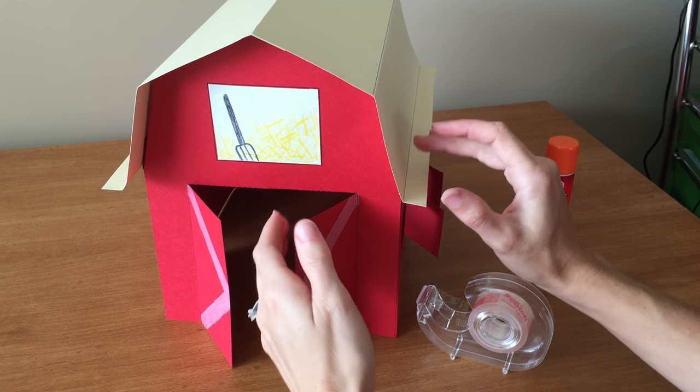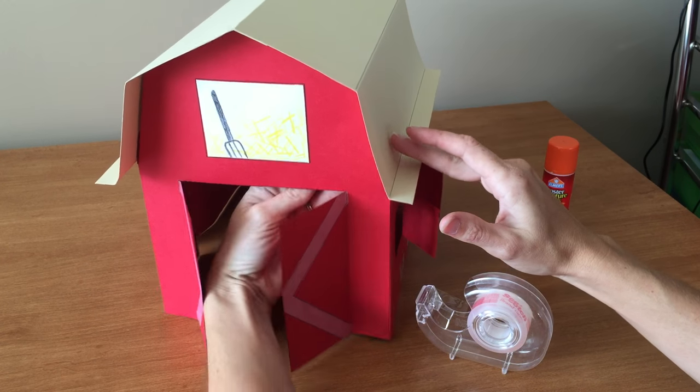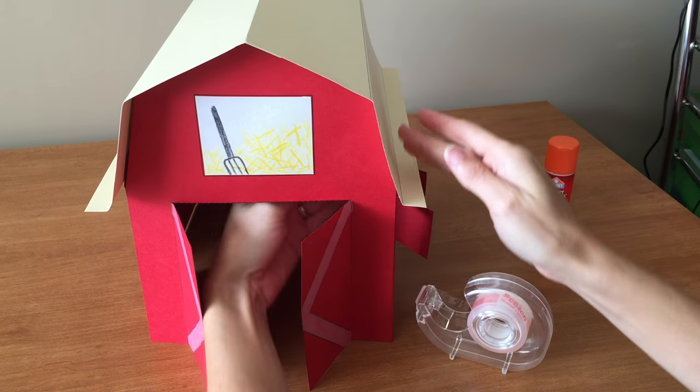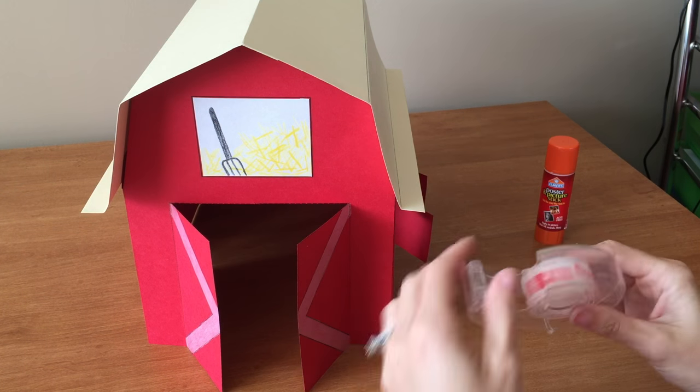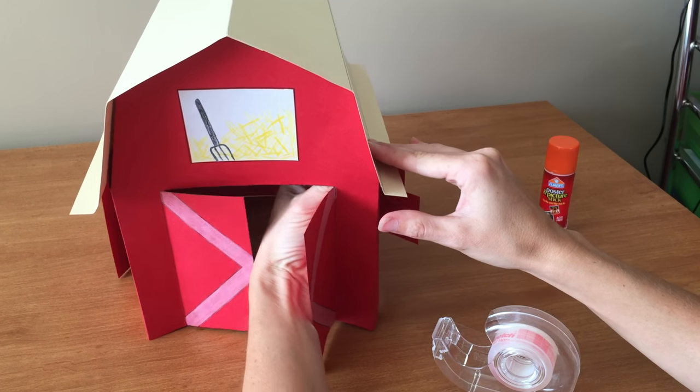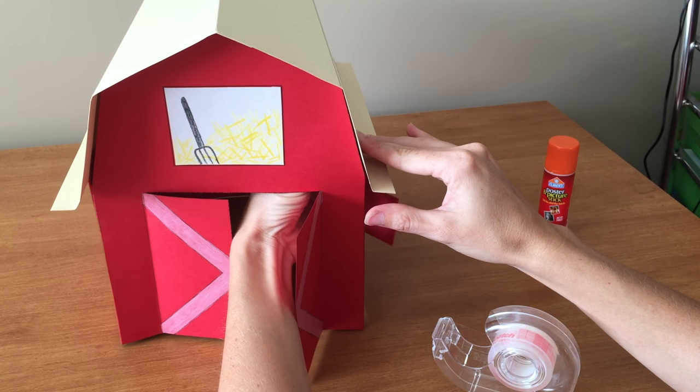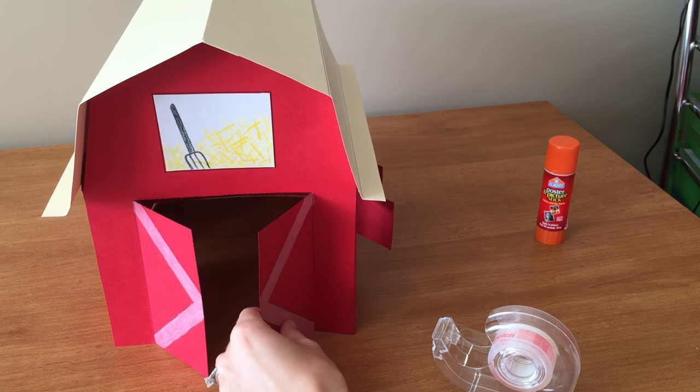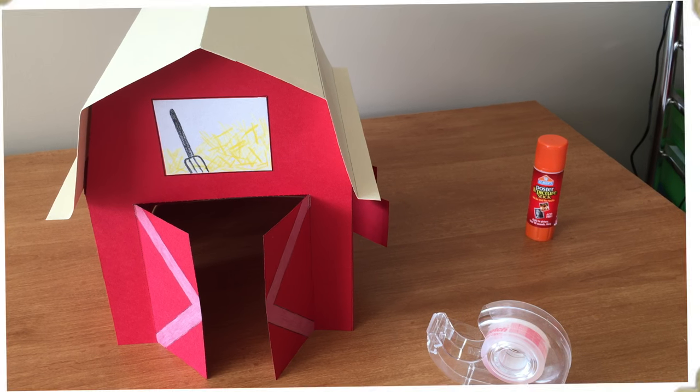Gluing this last piece of roof on is probably the trickiest part so feel free to stick your hand right in the barn doors to press that down. And you can also take a little piece of tape if you'd like and go in and put that on top of your tabs to help your roof stay in place. And then you're done. There's your barn.